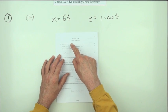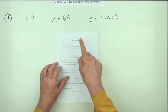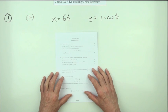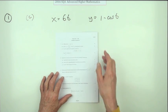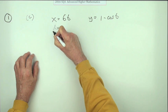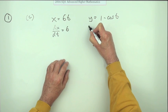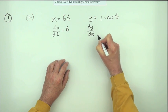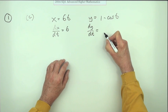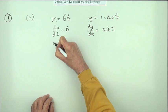And to complete the little differentiation packet for question one, a curve is given by these parametric equations. Find dy/dx. Well, since they're expressed in terms of t, the first thing you can find can be dx/dt which is 6, and dy/dt which would be positive sine t.